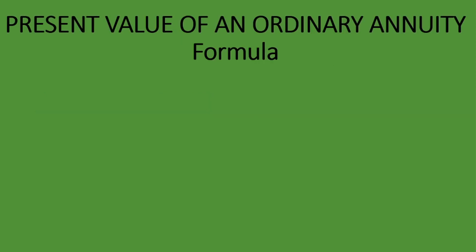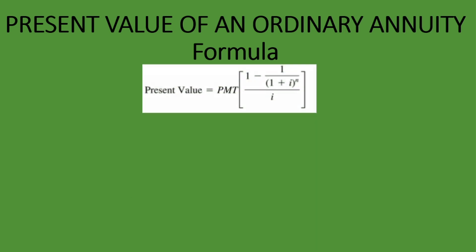Let's quickly look at the formula for the present value of an ordinary annuity. Present value equals PMT times the quantity: 1 minus the sum of 1 divided by (1 plus I) to the power of N, and then you take that entire sum divided by I. You finally multiply by PMT to get the present value of an ordinary annuity.